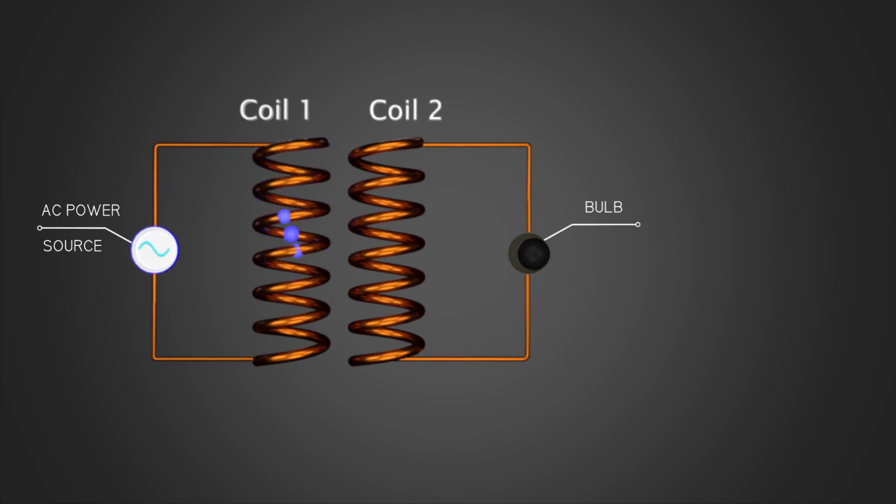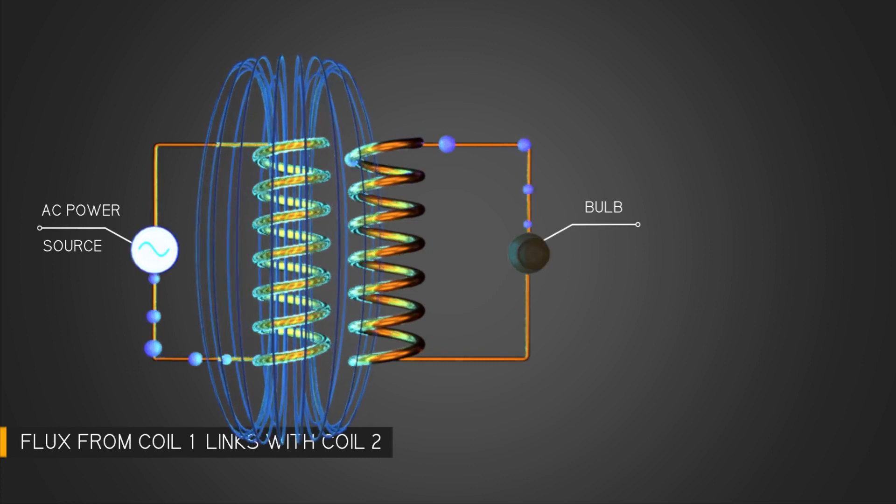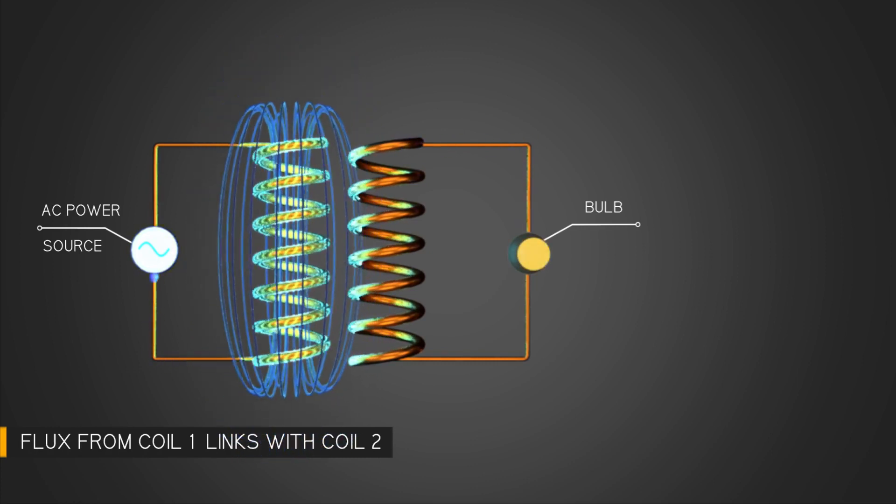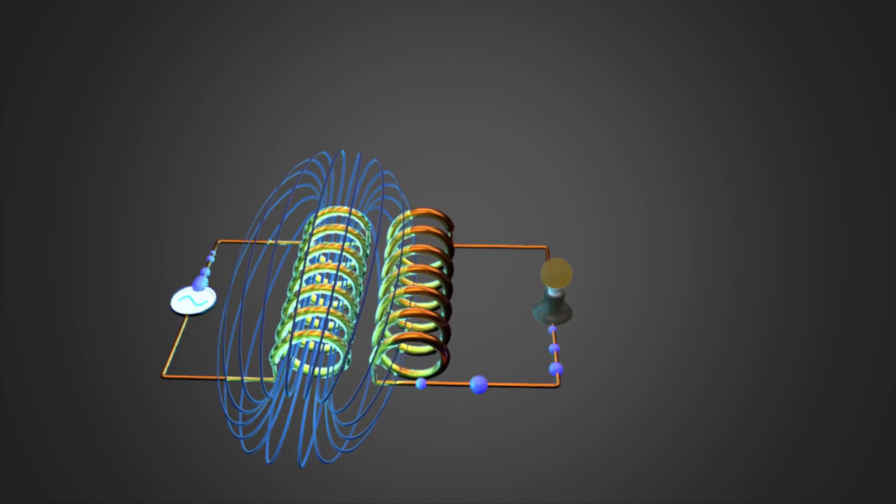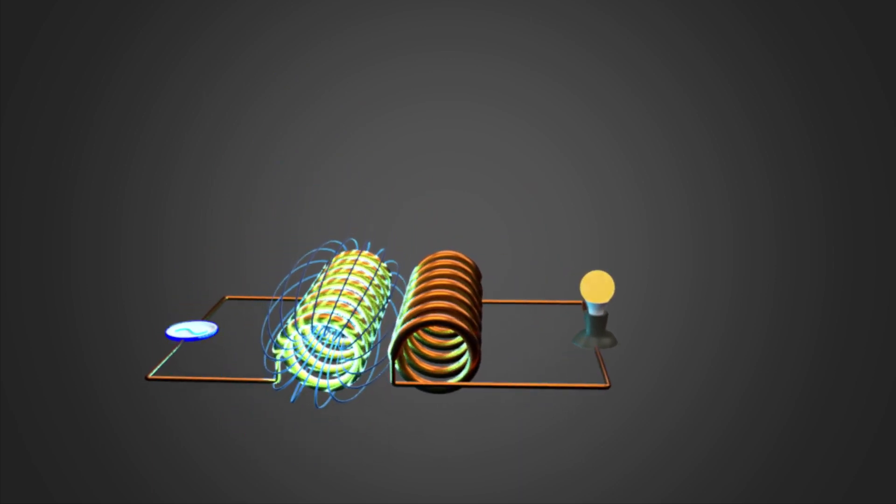So what happens when a magnetic flux links with a coil? Yes, an EMF will be produced in that coil. Hence we see the bulb attached to coil two glowing.